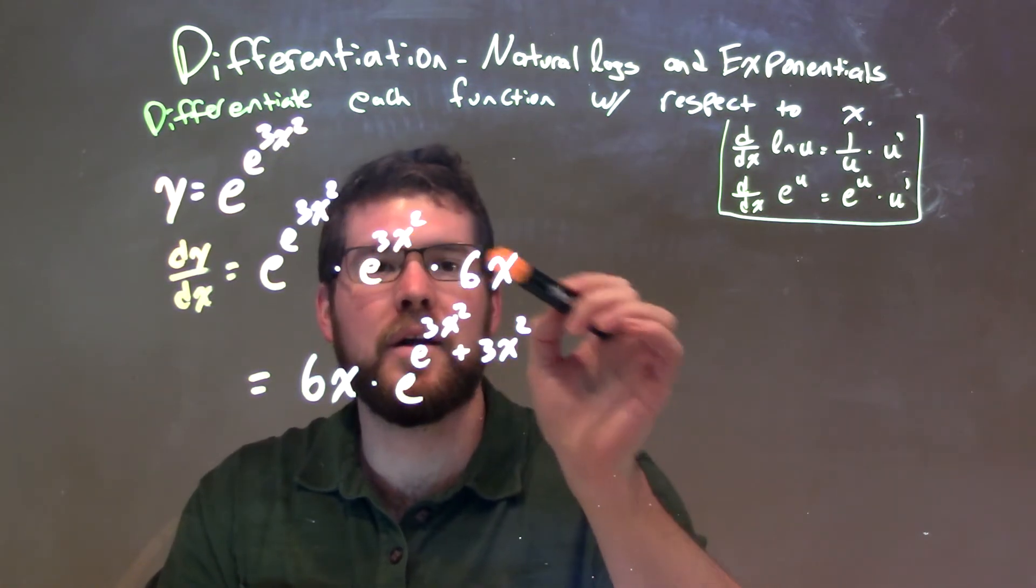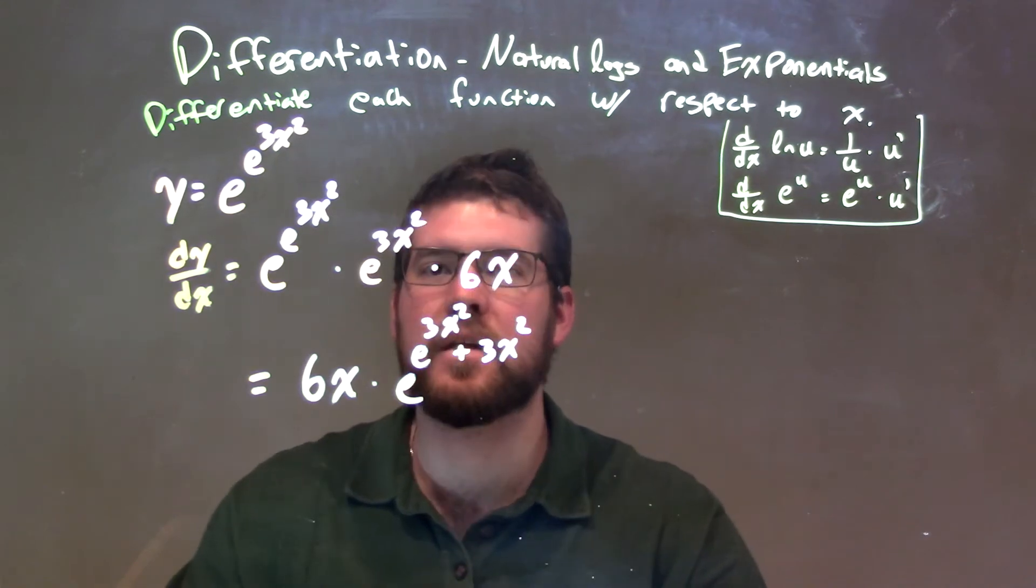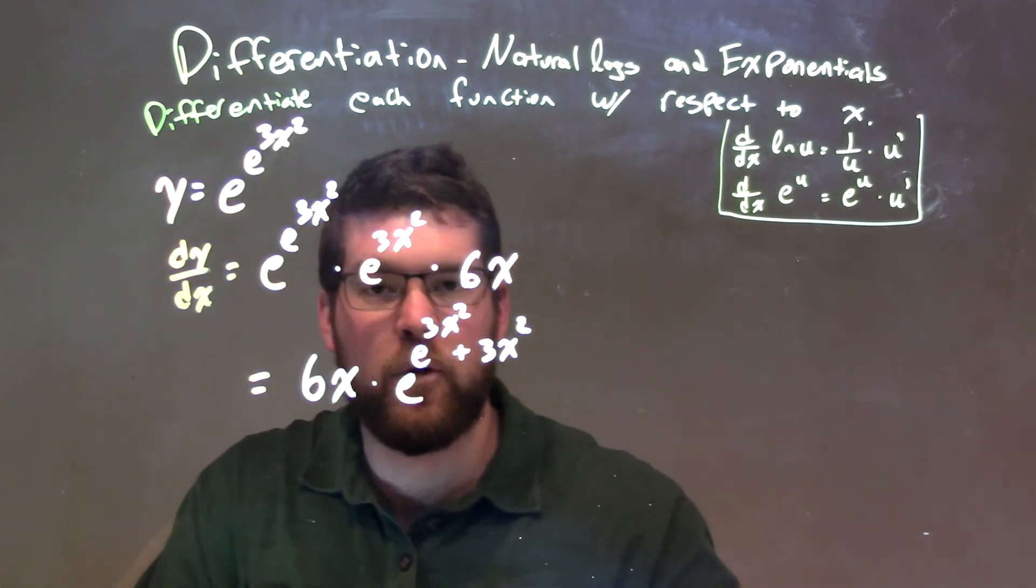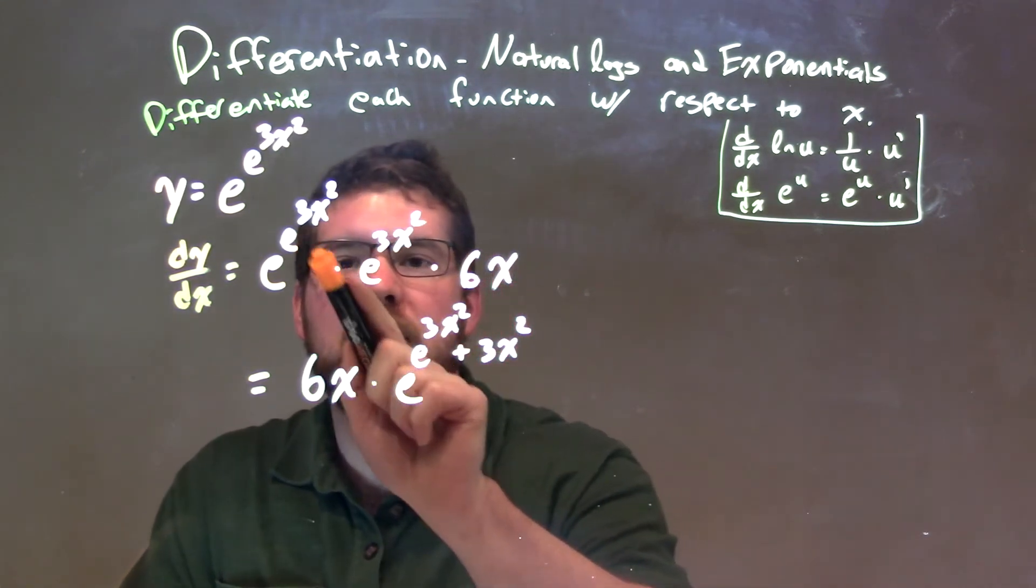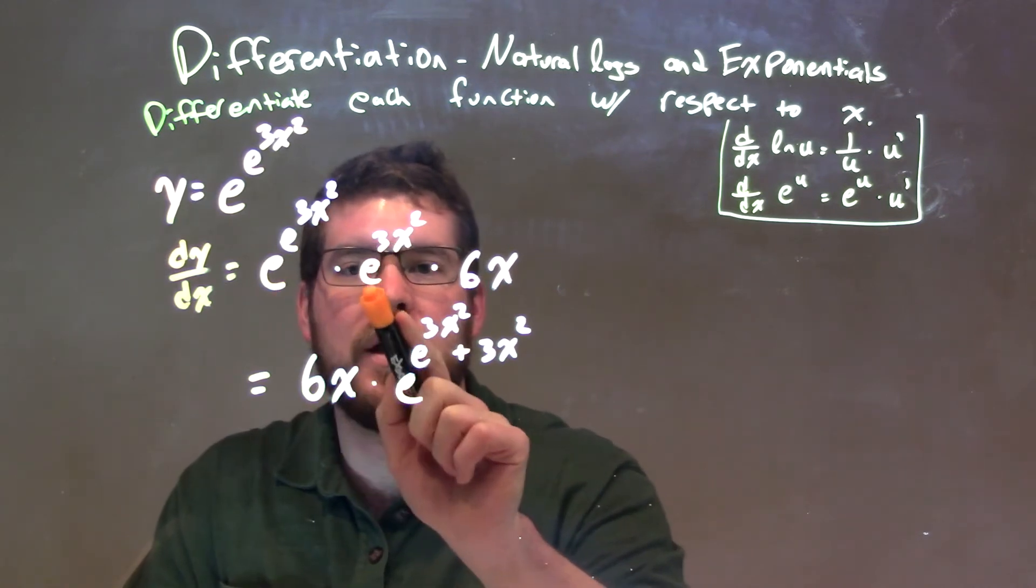Well, that exponent, 3x squared, is just 6x when we take that derivative. Now we simplify. 6x comes out front, and then since these have the same base right here, the exponents we are adding together.